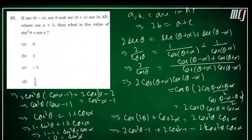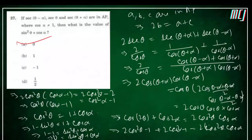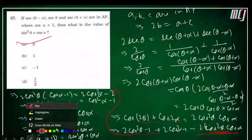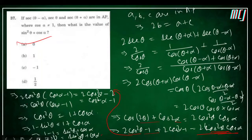The value of sin²θ + cosα is 0, so the answer is 0. I hope this was clearly understood. The key step was applying the formula on the right-hand side and collecting the 2cos²θ terms on one side.